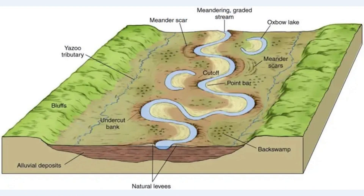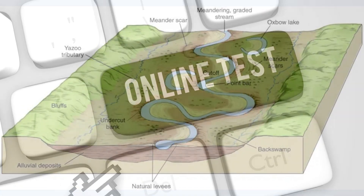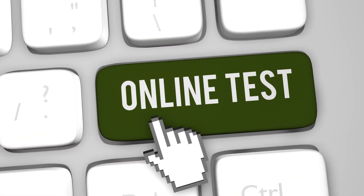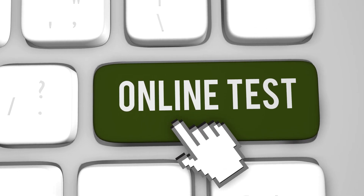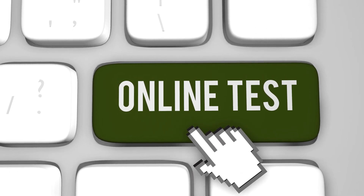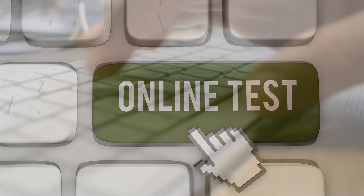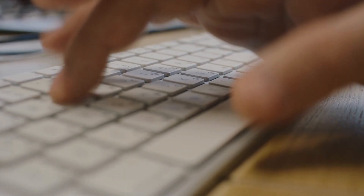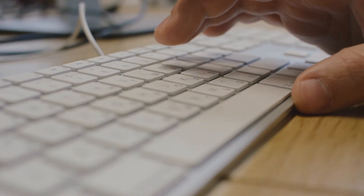We've just uncovered how rivers shape the land — twisting through valleys, carving out cliffs, and building up fertile floodplains and deltas. Now it's your turn to test your knowledge. Pause the video, answer the questions coming up, and then check your answers on screen. Lock in what you've learnt, MAGFAR style.